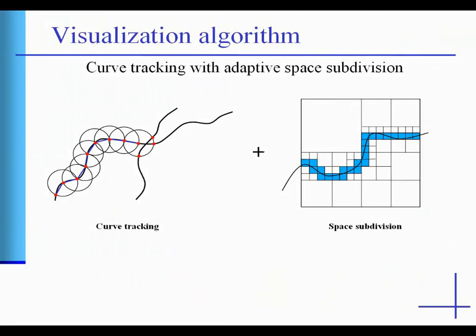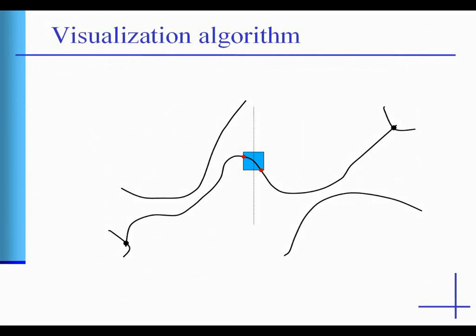In the visualization step, each x-monotone curve arc is rasterized separately regardless of how close to its neighboring branches it resides. The curve tracking algorithm starts with a seed point lying on a curve arc and traces the arc in both directions towards the end points.